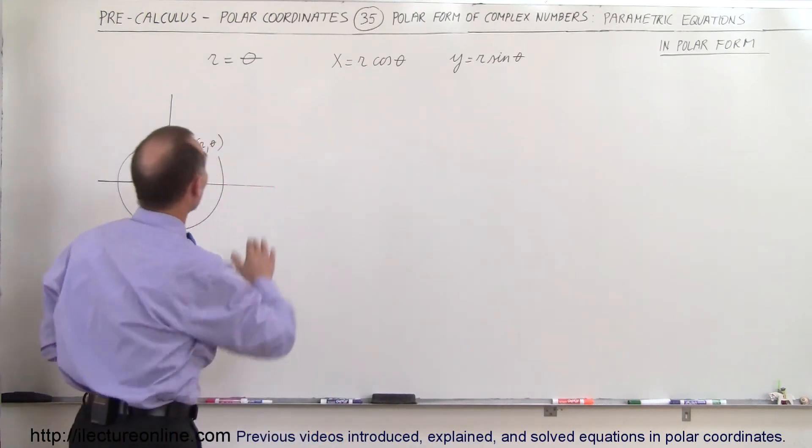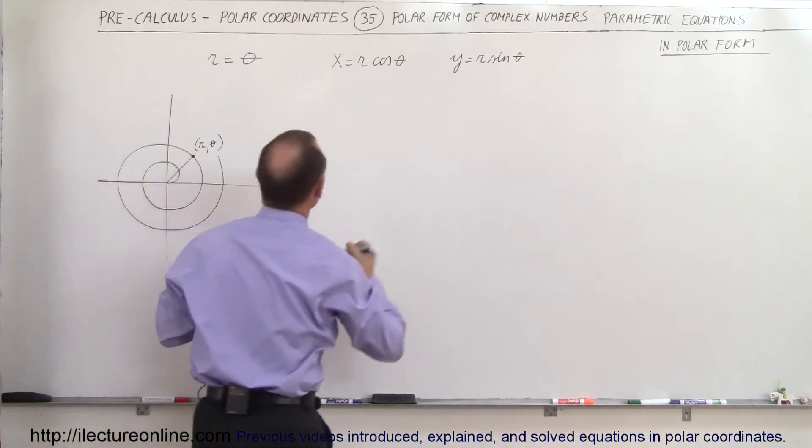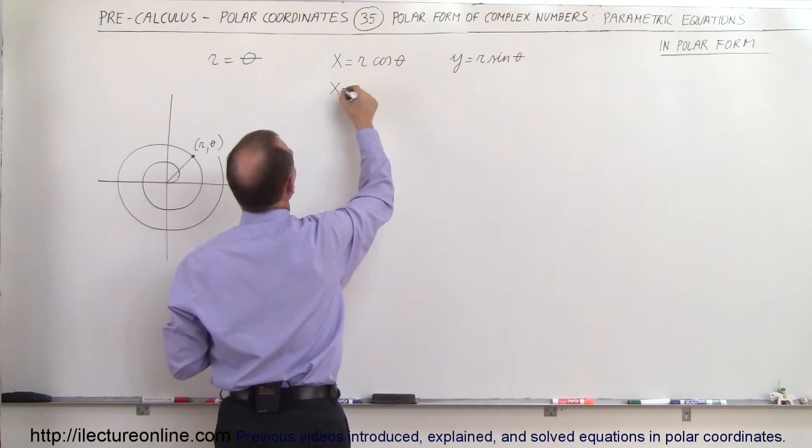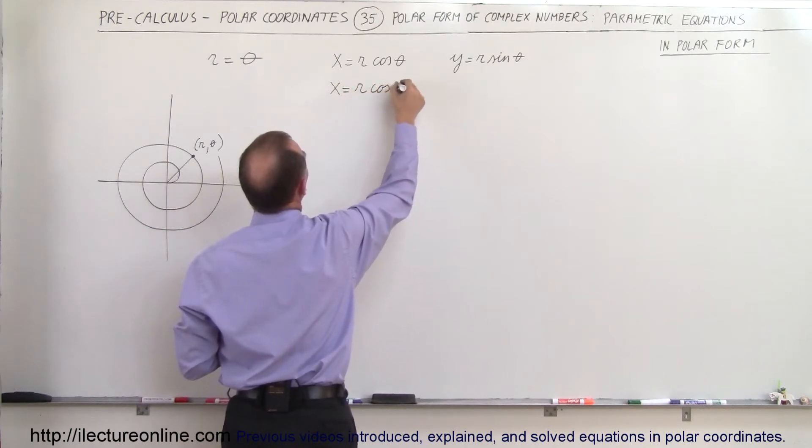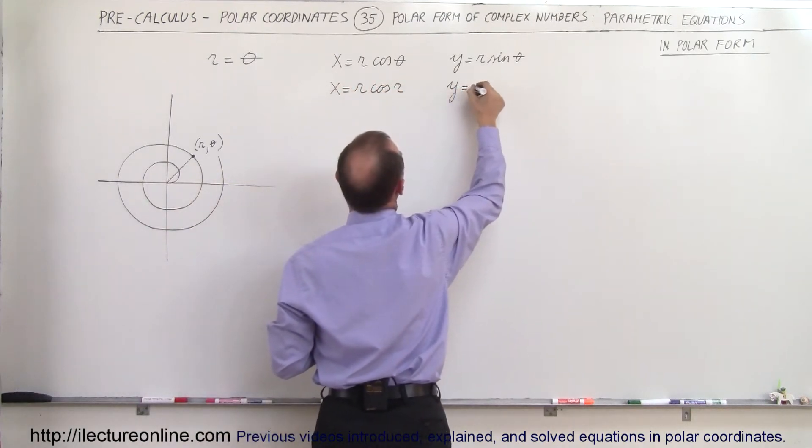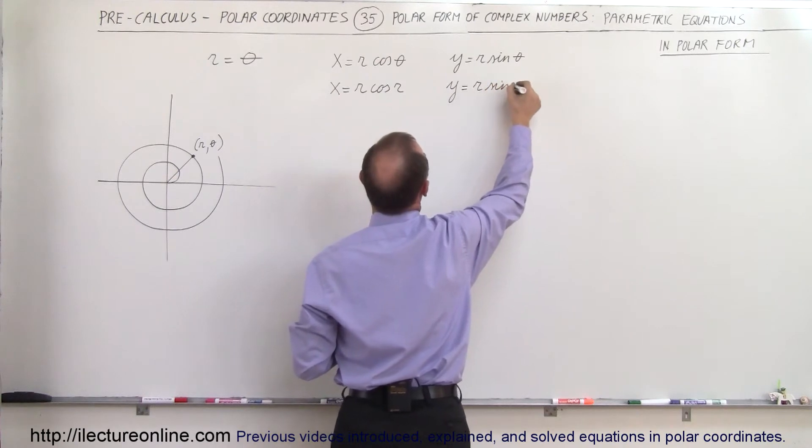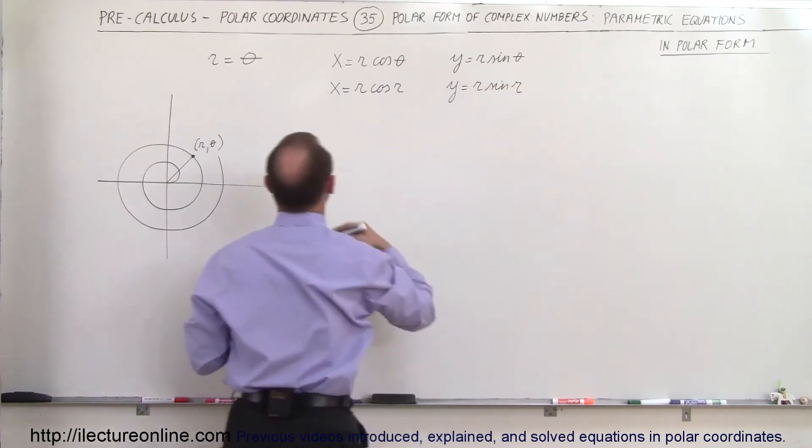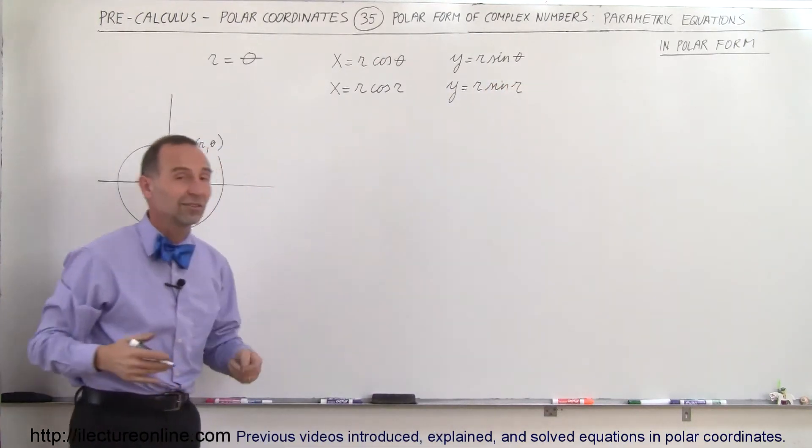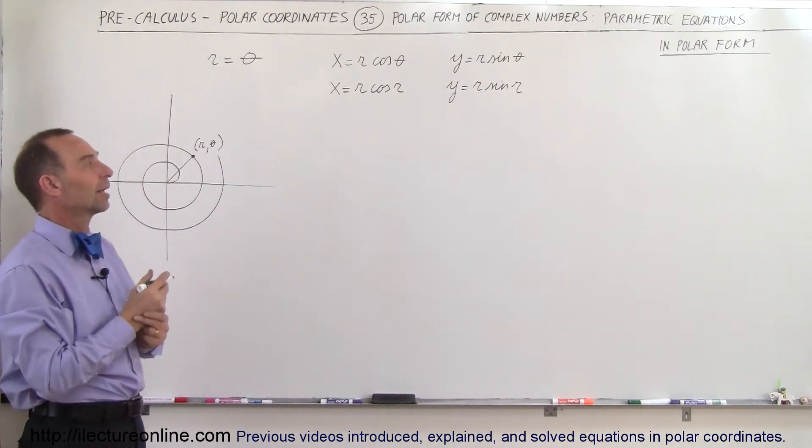And since in this case r and theta are equal to each other, we could say that means that x is equal to r times the cosine of r and y is equal to r times the sine of r. Or we can write that x is equal to theta times the cosine of theta or of course y equals theta times the sine of theta.